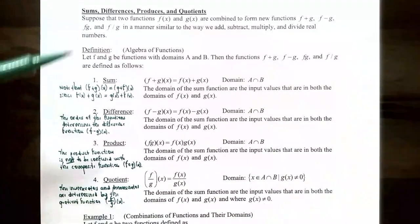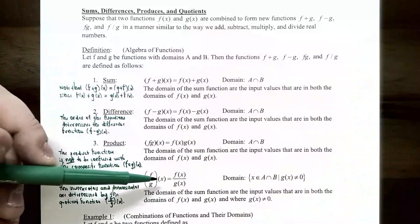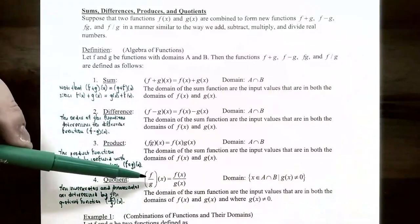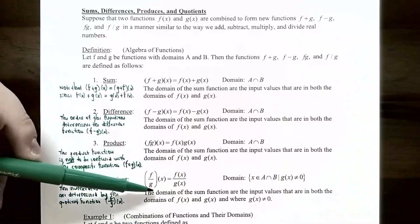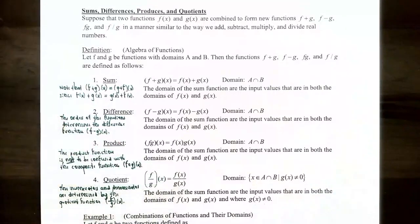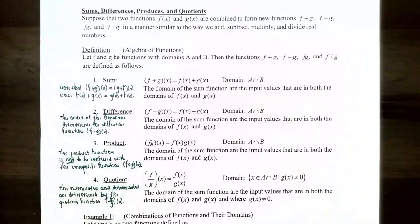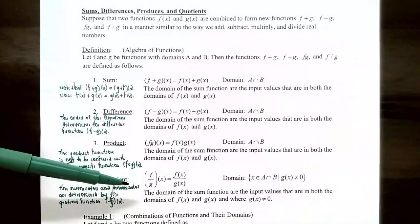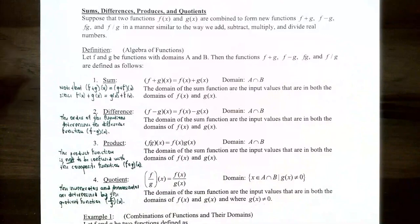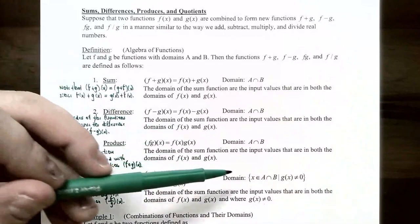The quotient function is f divided by g of x. Notice that f is in the numerator, so it's f of x divided by g of x. The order is important here as well. The domain of the quotient function is the set of all x values in the domain of f and also the domain of g, but you must also exclude the x values where the denominator g of x is equal to zero, because that would make the whole function undefined.